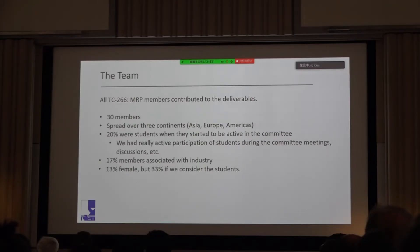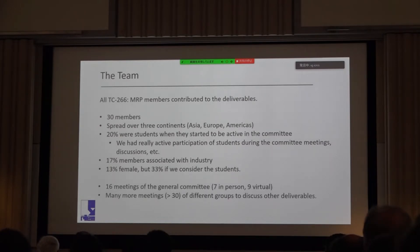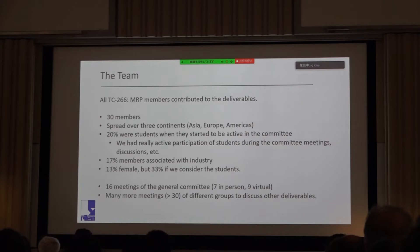70% of members were associated with industry, which is impressive for an academic topic. We could have been better on gender: we're at 30% female, although if you look at students only, it's a third, so we're moving in a good direction. We had 16 meetings in total — seven in-person, nine virtual — for the general committee, plus many additional subcommittee meetings. I've lost count, but it's definitely more than 30.